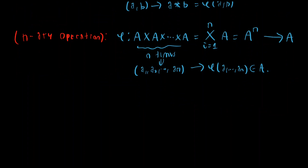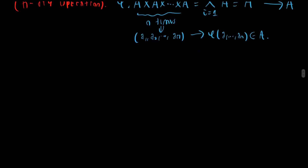It is on this definition of a binary operation that we define the notion of a group. When we consider algebraic structures, especially in the beginning when we work with group theory, we will consider sets together with a binary operation. Being this an introductory course in abstract algebra, we will avoid all the details of axiomatic Zermelo-Fraenkel set theory. We assume that whoever is watching has a more intuitive understanding of sets — what is sometimes called in mathematics textbooks naive set theory. This is often the approach taken in introductory abstract algebra and topology courses.